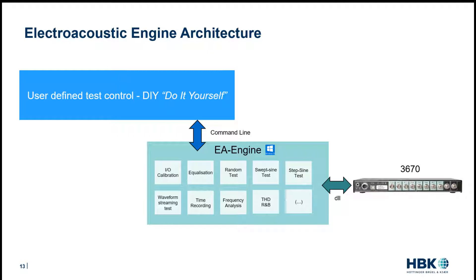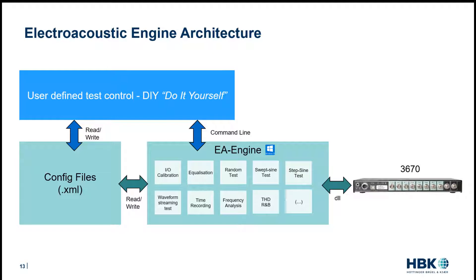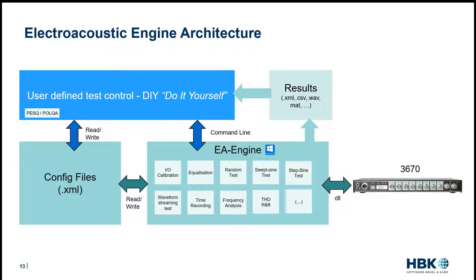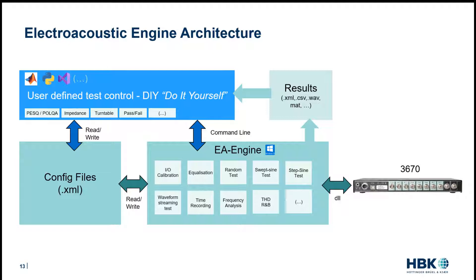Because the EA Engine is a toolbox it doesn't have any graphical user interface. You can have your own user-defined test control that you program yourself and interact with the engine via command lines. For detailed configuration there is a set of config files you can read or write to adjust the test as needed. The EA Engine outputs test results as XML, CSV, WAV files, and MATLAB. You can also add a POLQA algorithm, electrical impedance, or turntable control. This user-defined test control can be done in MATLAB, Python, Visual Studio, or any application supporting command lines and XML.